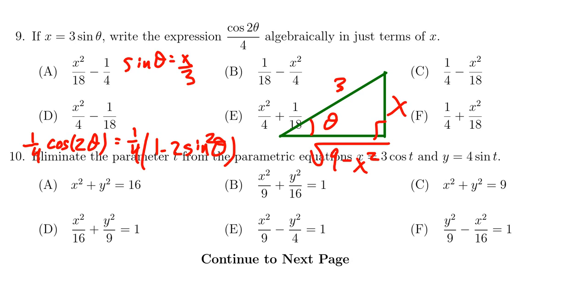And so honestly I could have gotten away with this without having to draw the diagram whatsoever because the formula just depends on sine right here. So we end up with one-fourth times one minus two times, well x over three, square that of course.